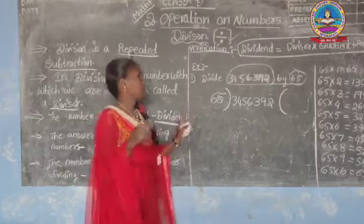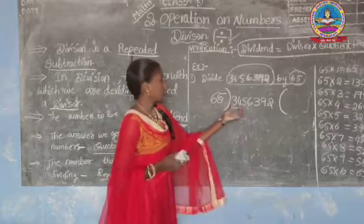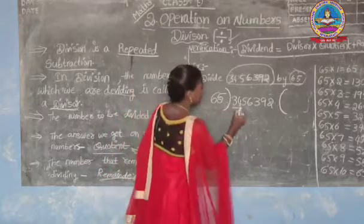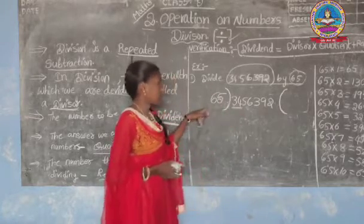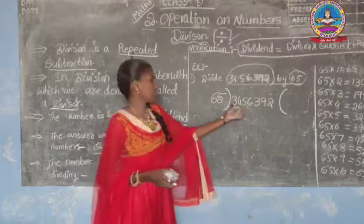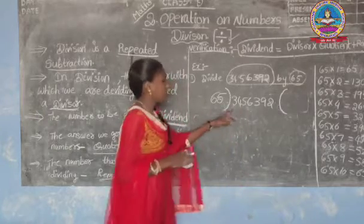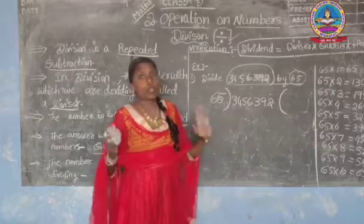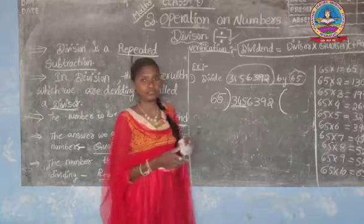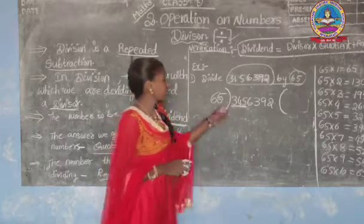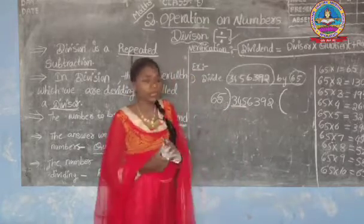How to divide this number? First we will take two numbers from the left side. That gives us 34. But 34 is smaller than 65, so we can't divide a smaller number by the bigger number. We will take three numbers from the left side — 345. And 345 is bigger than 65.